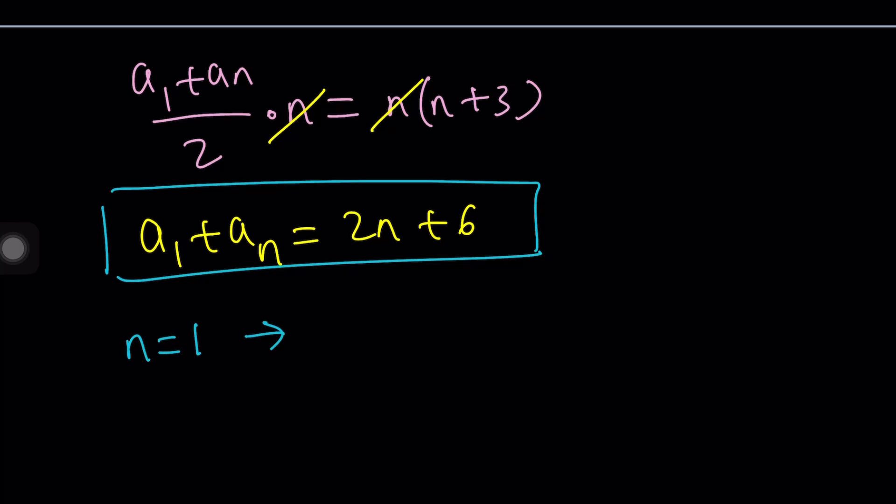So when you replace n with 1 on both sides, you get a 1 plus a 1 or a sub 1, whatever you want to say. You're going to get 2 a sub 1 equals 2 plus 6, which is 8. So from here, you get a sub 1 or a 1 equals 8. A 1 is the first term. How is that going to help us find the answer? Uh-oh. How am I dividing by 2? Not very good with arithmetic, I guess. So a 1 is equal to 4.